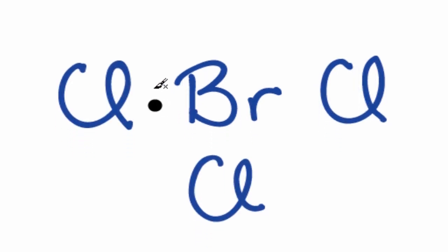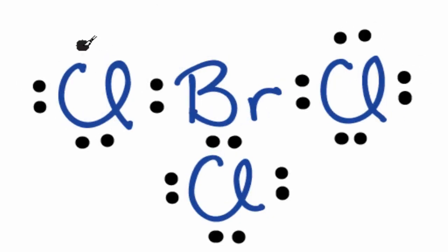So we have 28 valence electrons. We'll put 2 between atoms to form chemical bonds—we've used 6 valence electrons. And then around the outside: 2, 4, 6, 8, 10, and 24.